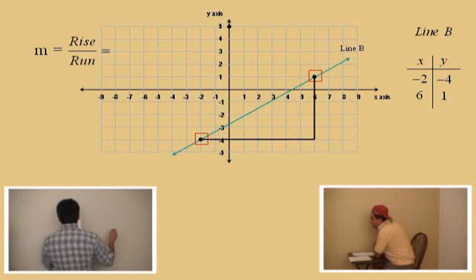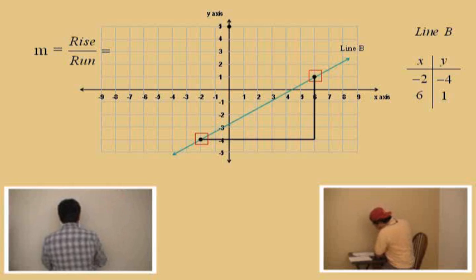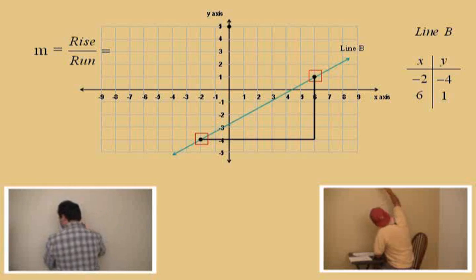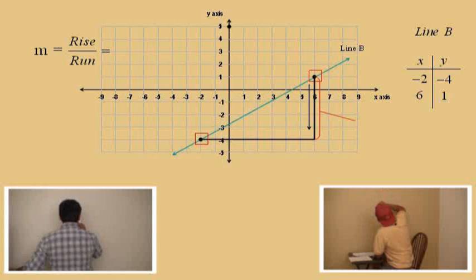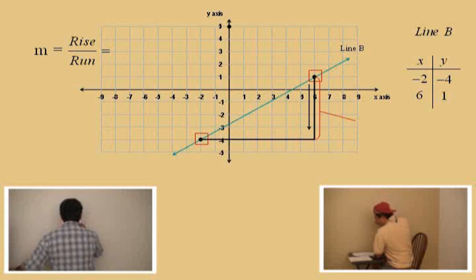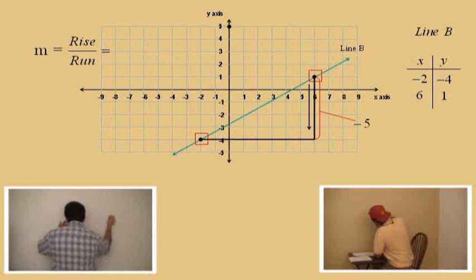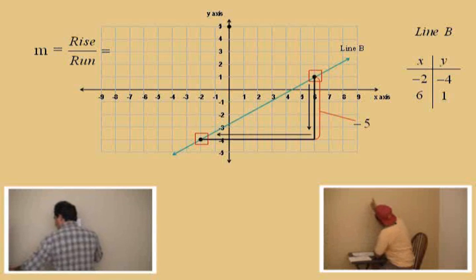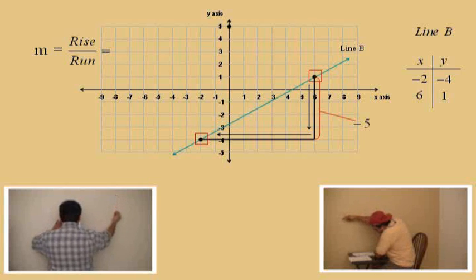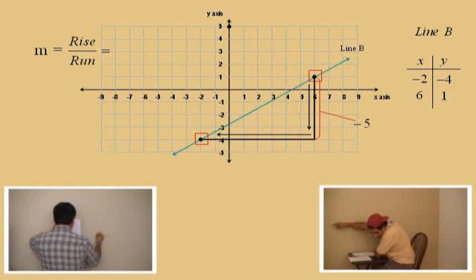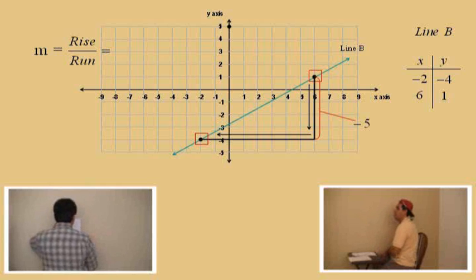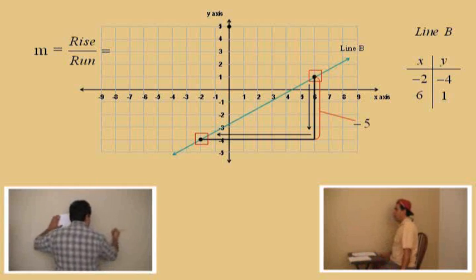We're going to start at that point over there, come down, and move to the left. Charlie, how far do you come down? Five. Five steps. So we say our rise is negative five, because we're coming down. Now, we've got to move to the left. How far do we have to move? We came down five, now we've got to move how far to the left? Eight. So our run is negative eight.